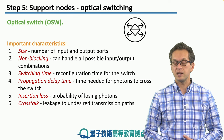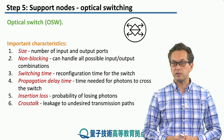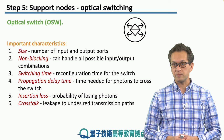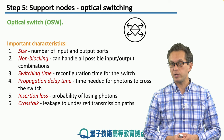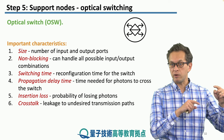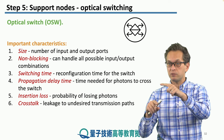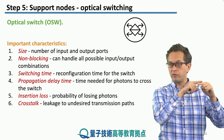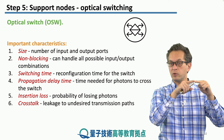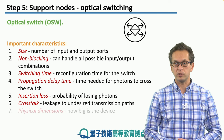Number six is crosstalk. This characterizes the leakage to undesired transmission paths. For example, if we set our 2x2 switch to connect input ports straight to the output ports without crossing, there's still some finite probability that a photon traveling in one of the input ports will jump across to the other output port.